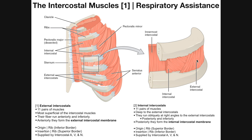When we talk about the external intercostals, the origin of the muscle is the inferior border of the rib above. The insertion of the external intercostals will be the superior border of the rib below. So origin on top, insertion below. If we think about the action of muscles where the insertion is pulled toward the origin, if the muscle were to contract, it would pull the rib below upward toward the rib above.